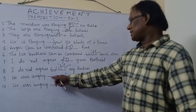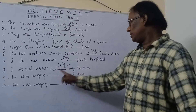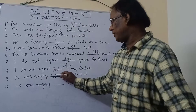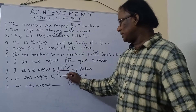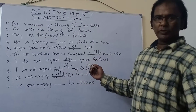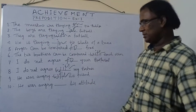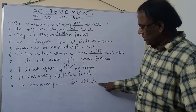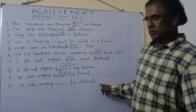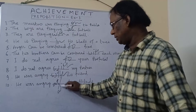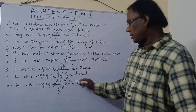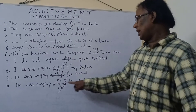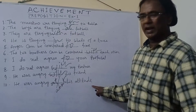Number 9 and number 10. Sentence 9: 'He was angry with his friend.' 'Angry' is followed by a person — friend — therefore the answer is 'with.' Number 10: 'He was angry at his attitude.' Here we have an object, so the answer is 'at.' It can also be 'about.' To summarize: 'angry with' is used in case of a person; 'angry at' or 'angry about' is used in case of an object or attitude.